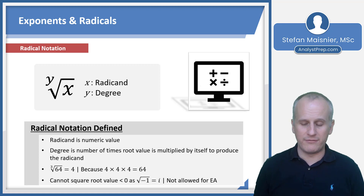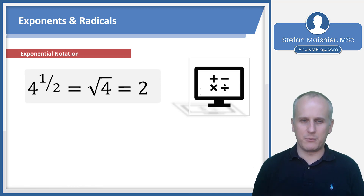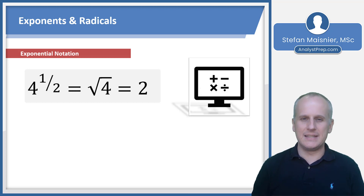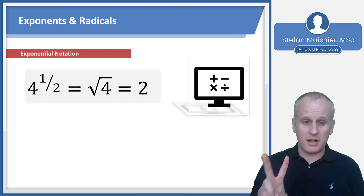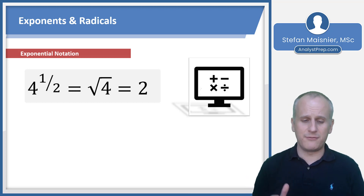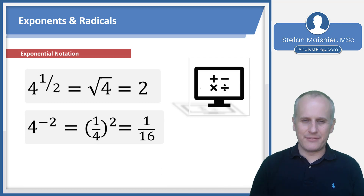Let's go back to exponential notation and cover some less familiar exponents. Four to the one-half power means the square root using exponential notation. The reason is we're taking half of the equivalent factors of four — four can be split into two equal factors of two — so four to the one-half power is the same as the square root of four, which is just two.